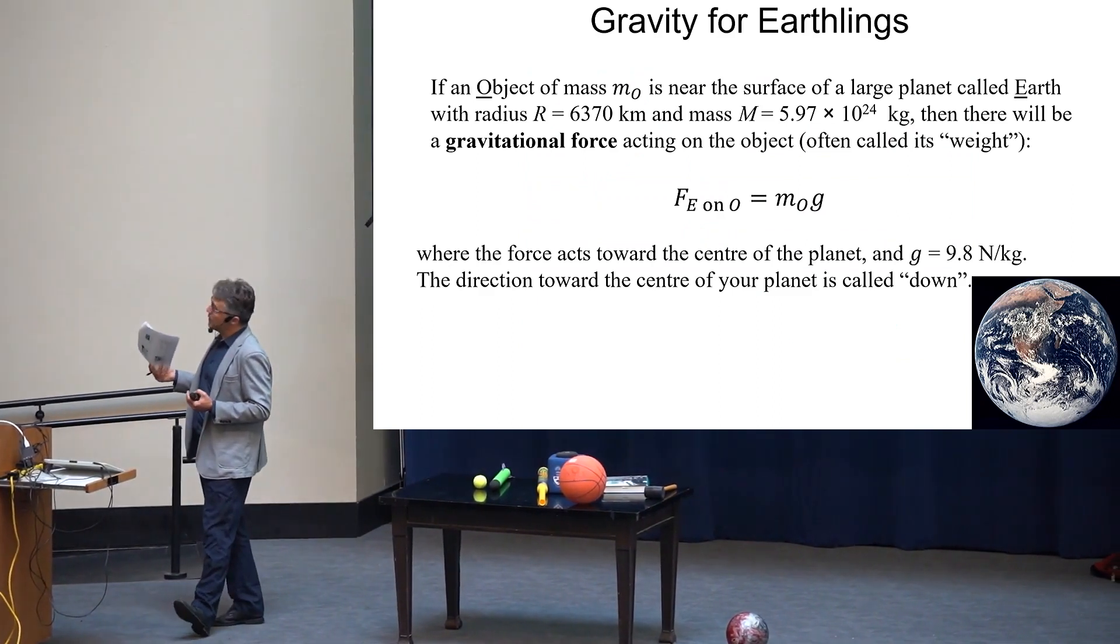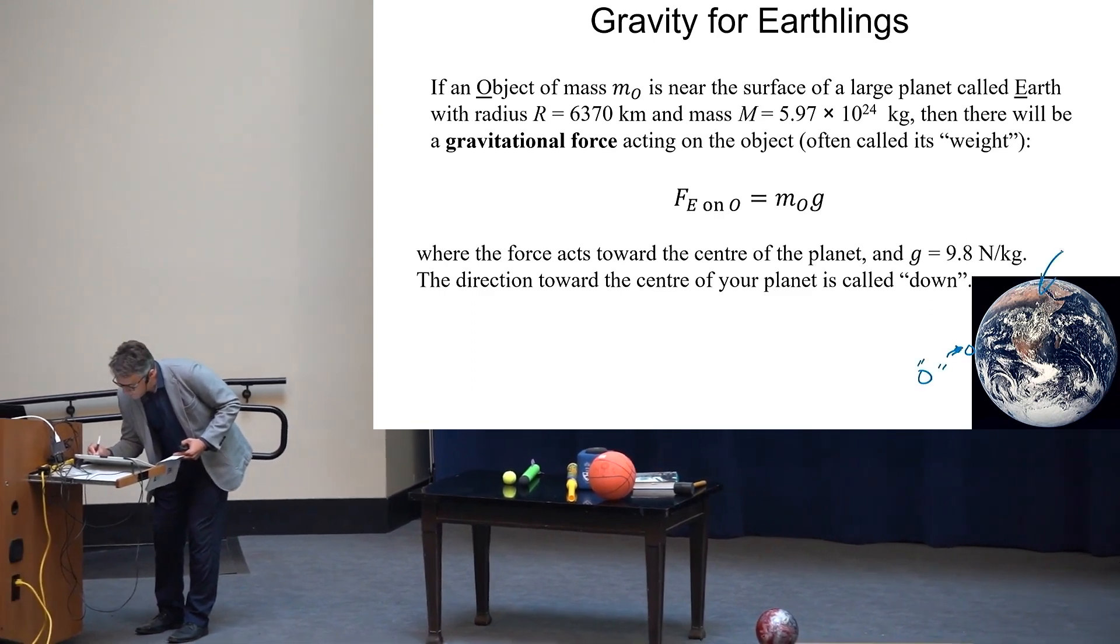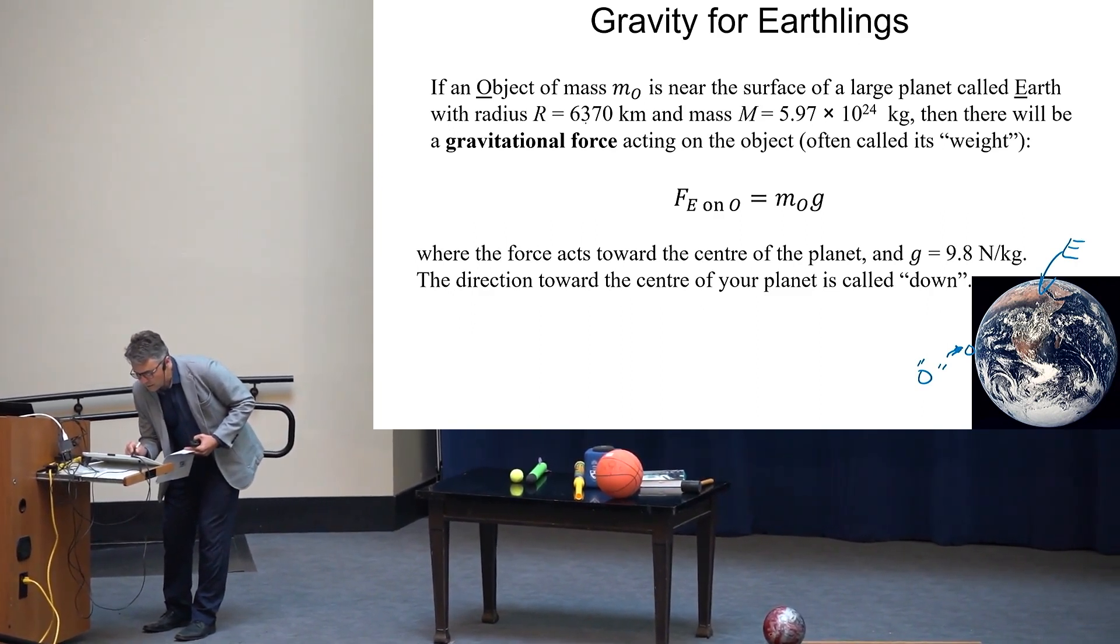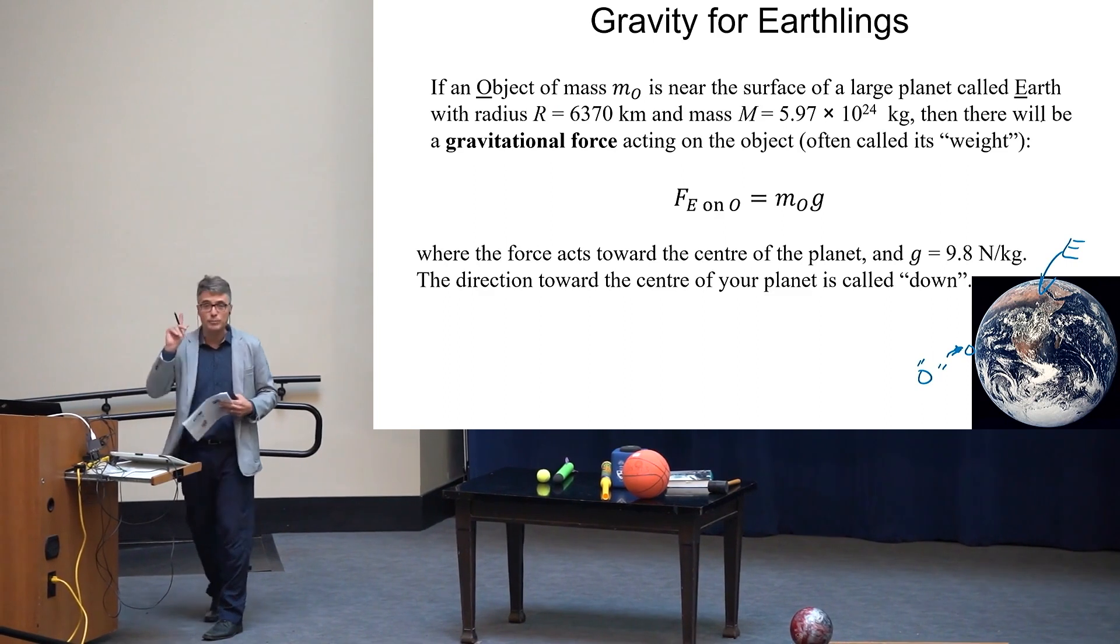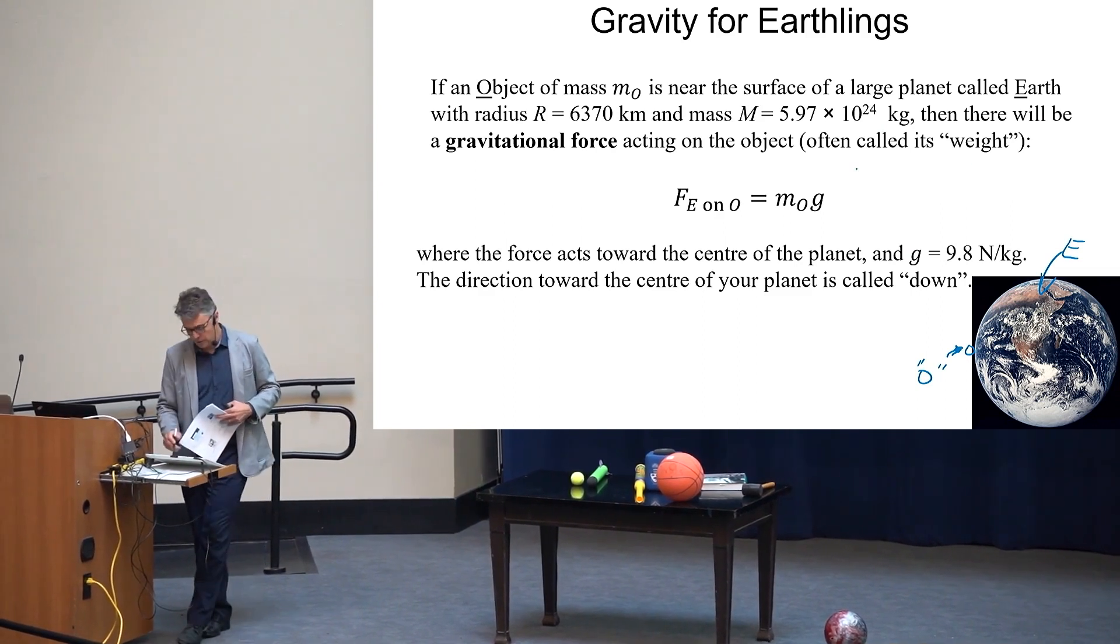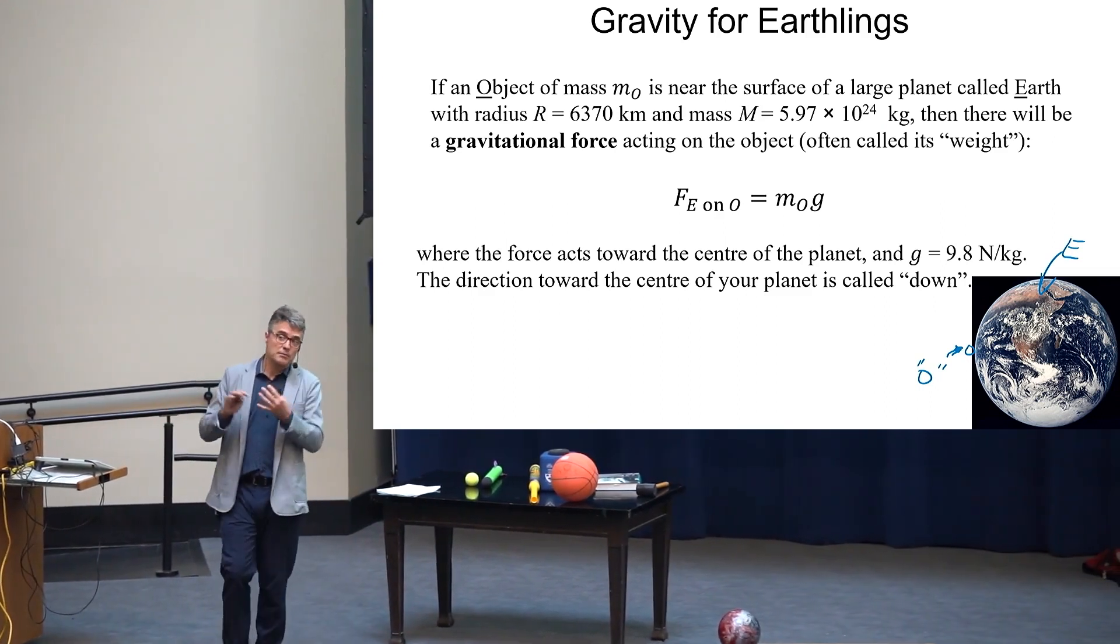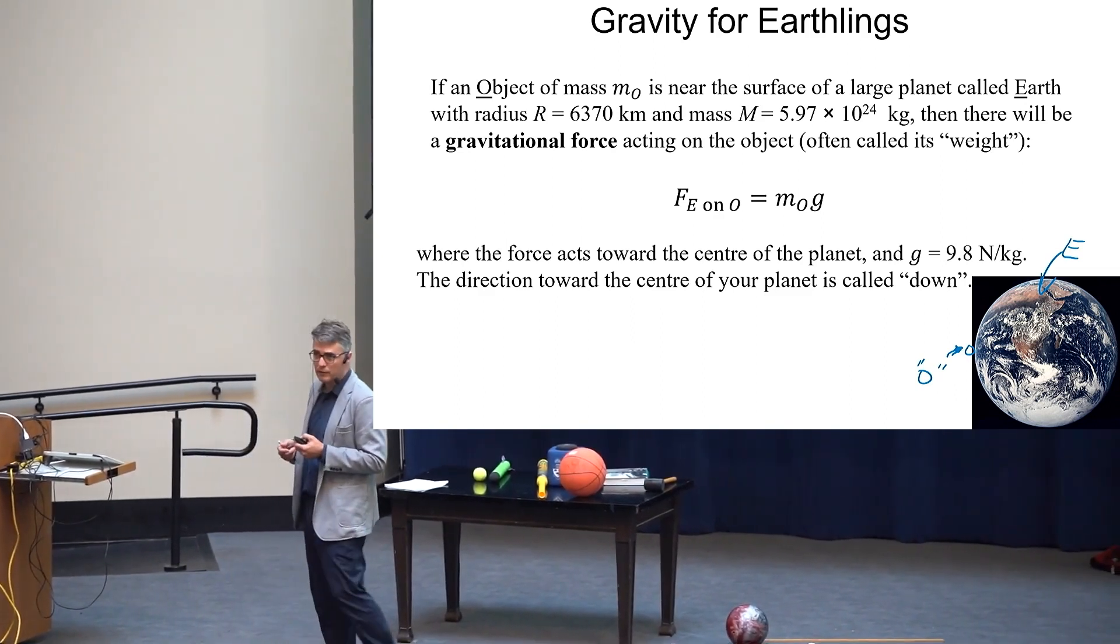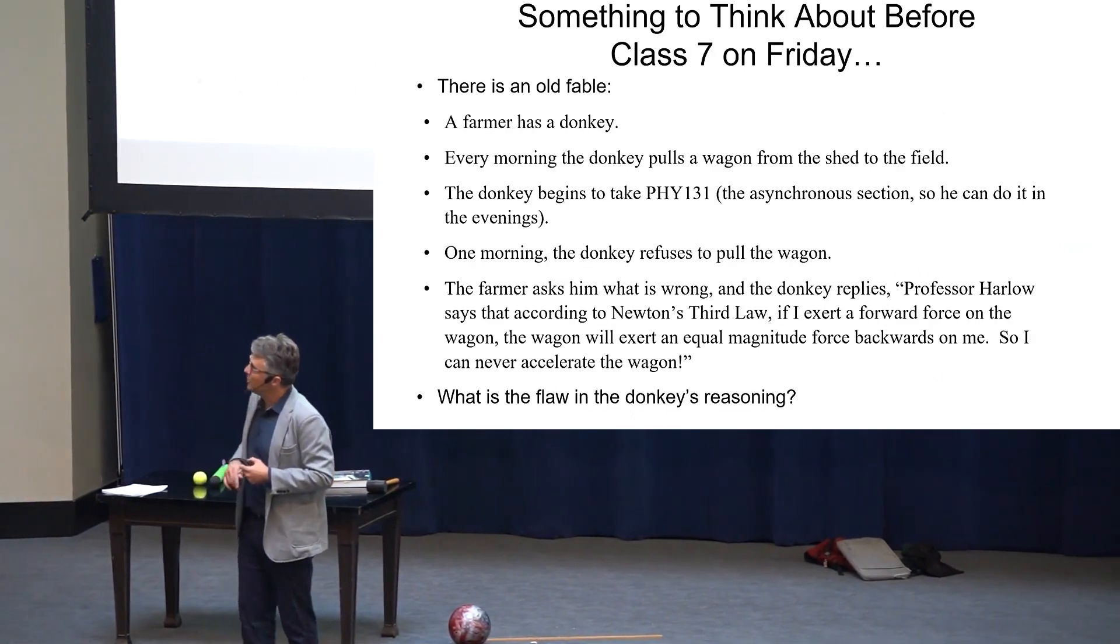If an object of mass MO is near the surface of a large planet we might call Earth with a radius of 6,376 kilometers and a mass of 5.7 times 10 to the 24 kilograms, then there will be a gravitational force acting on the object called its weight. When you have all these particular values, you get 9.8 newtons per kilogram for the surface of the earth. If we went to the moon, you'd have a different mass planet, different radius, and a different acceleration due to gravity.